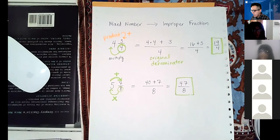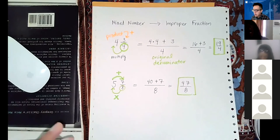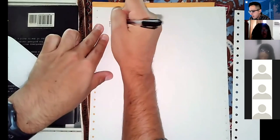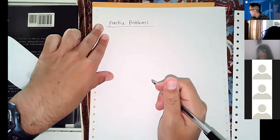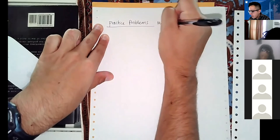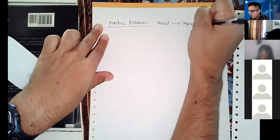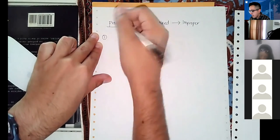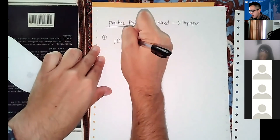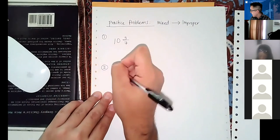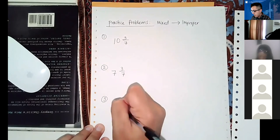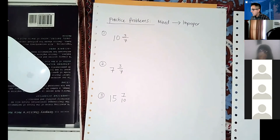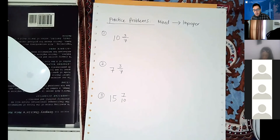With the remaining time, let's do some practice problems — converting from mixed numbers to improper fractions: 10 and three-sevenths, 7 and three-sevenths, and 15 and seven-tenths. Take a moment to convert those into improper fractions.